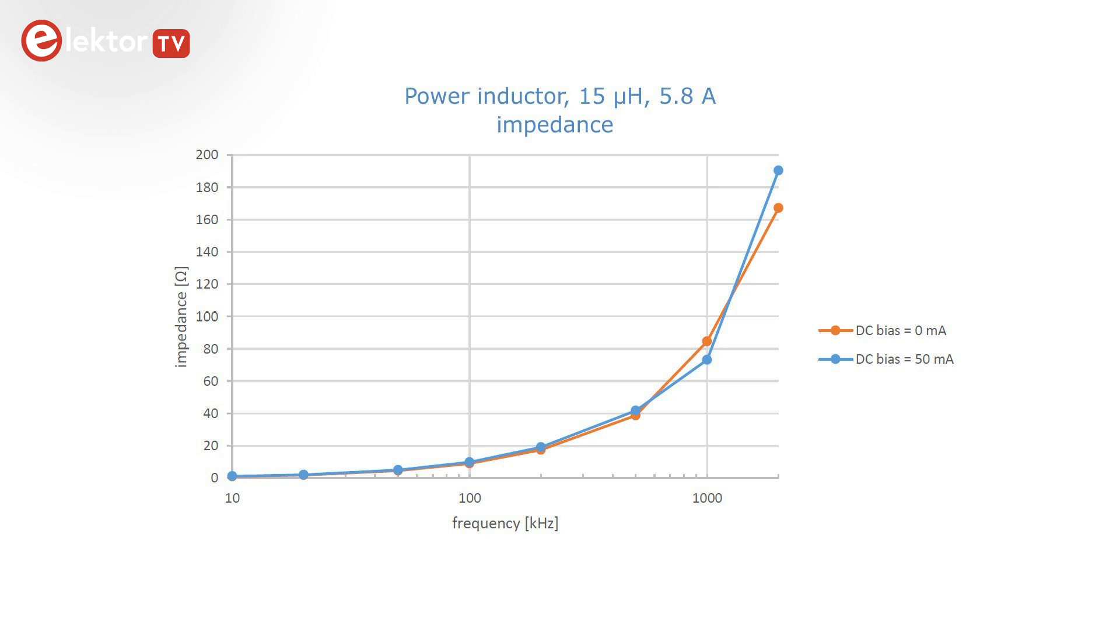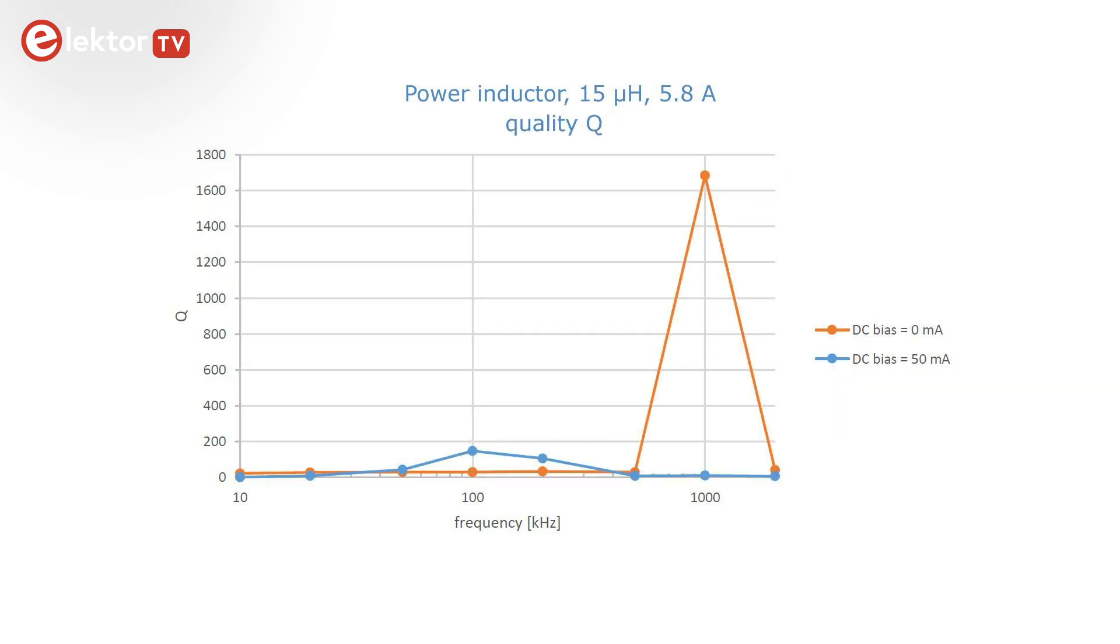The coil's impedance increases with frequency, as you would expect from an inductor. The bias current doesn't seem to have much influence here. The quality factor Q paints a different picture. Without bias it is quite wild, peaking at almost 1700 at 1MHz. With a bias current it is much more reasonable and peaks at only 100kHz.